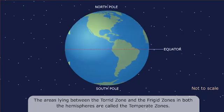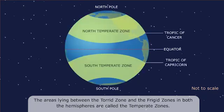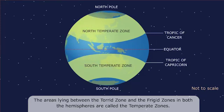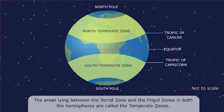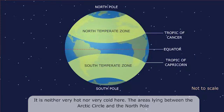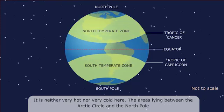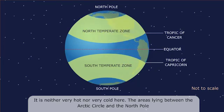The areas lying between the torrid zone and the frigid zones in both the hemispheres are called the temperate zones. It is neither very hot nor very cold here.